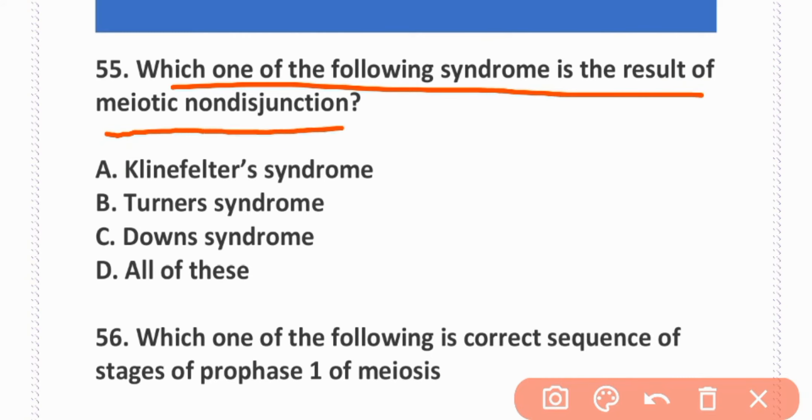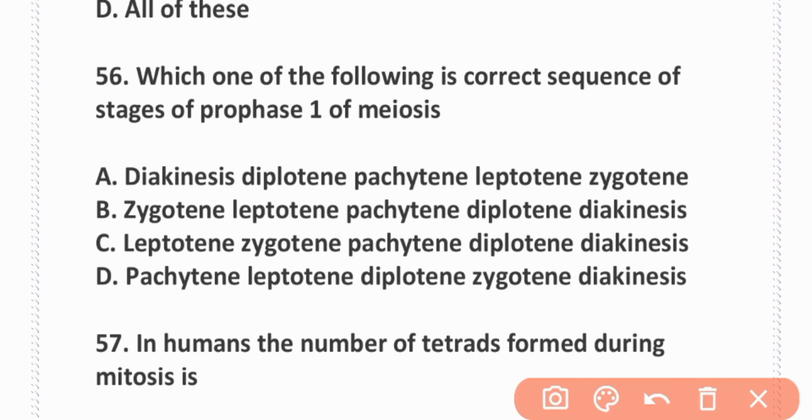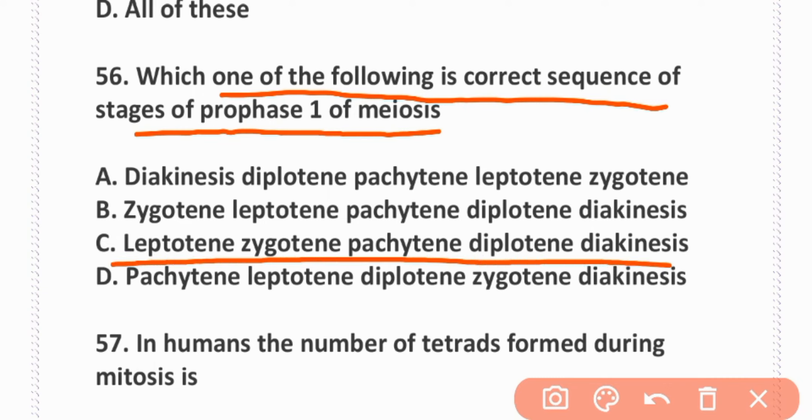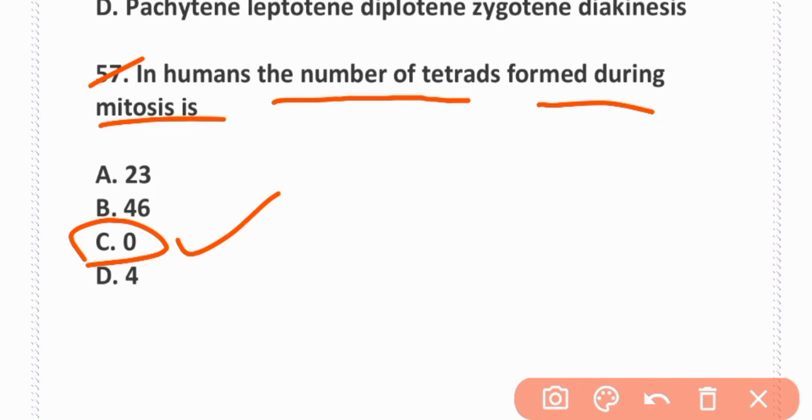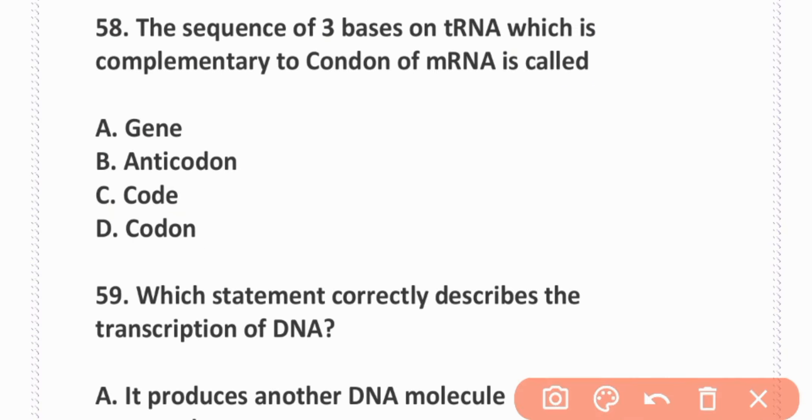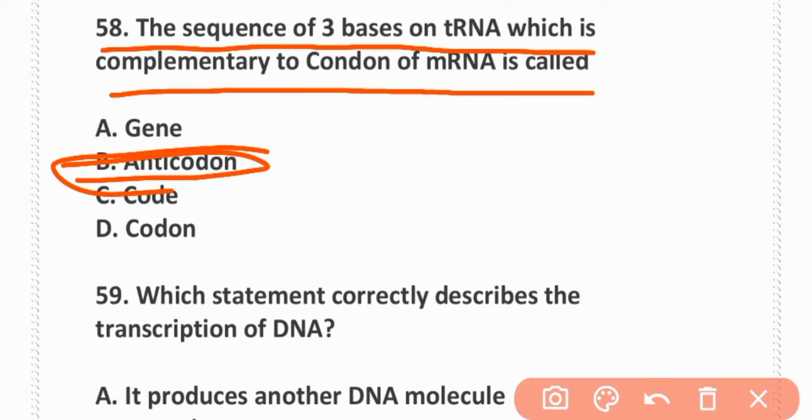Which is the correct sequence of stages of prophase one of meiosis? Leptotene, zygotene, pachytene, diplotene, diakinesis. Option C is correct. In humans, the number of tetrads to form during mitosis is zero. Option C. The sequence of three bases on tRNA which is complementary to a codon of mRNA is called anticodon. Option B is correct.